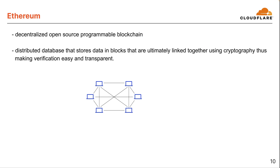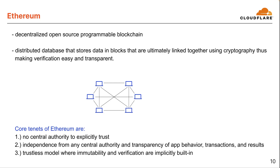Moving on to Ethereum. We covered IPFS for decentralized storage, and now we're going to briefly cover Ethereum for decentralized compute. Ethereum is a decentralized, open-source, programmable blockchain. It's a distributed database that stores data in blocks that are ultimately linked together using cryptography, thus making verification easy and transparent. The core tenets of Ethereum are there's no central authority to explicitly trust, independence from any central authority and transparency of app behavior, transactions, and results. And it's a trustless model where immutability and verification are implicitly built in.